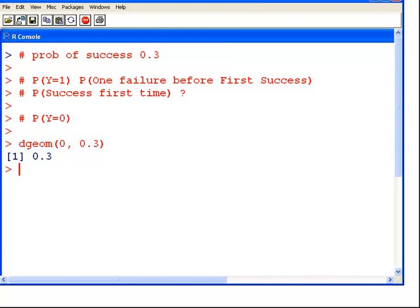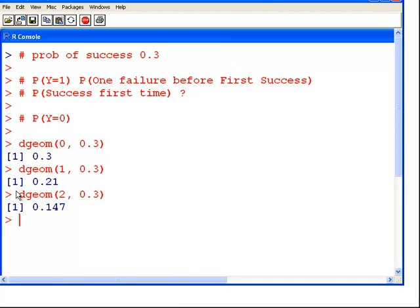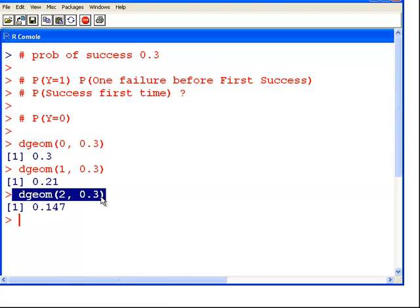So what's the probability you get it right the second time? 0.21, and so on. 0.147. So what does this mean? There was two failures before your first success.